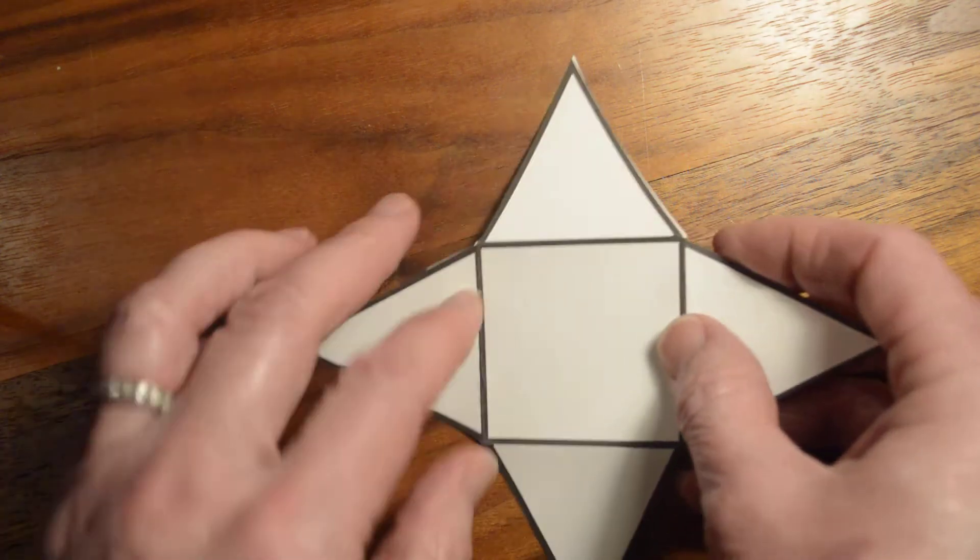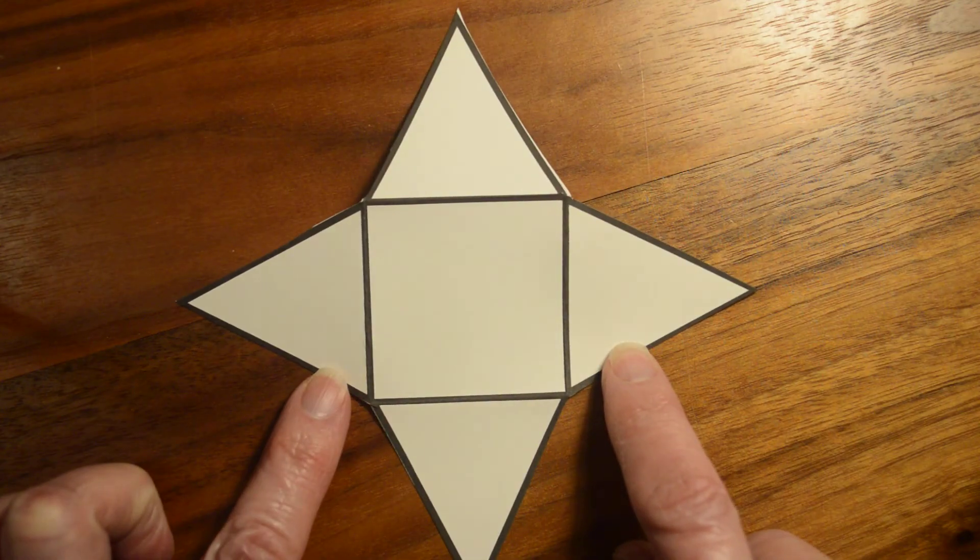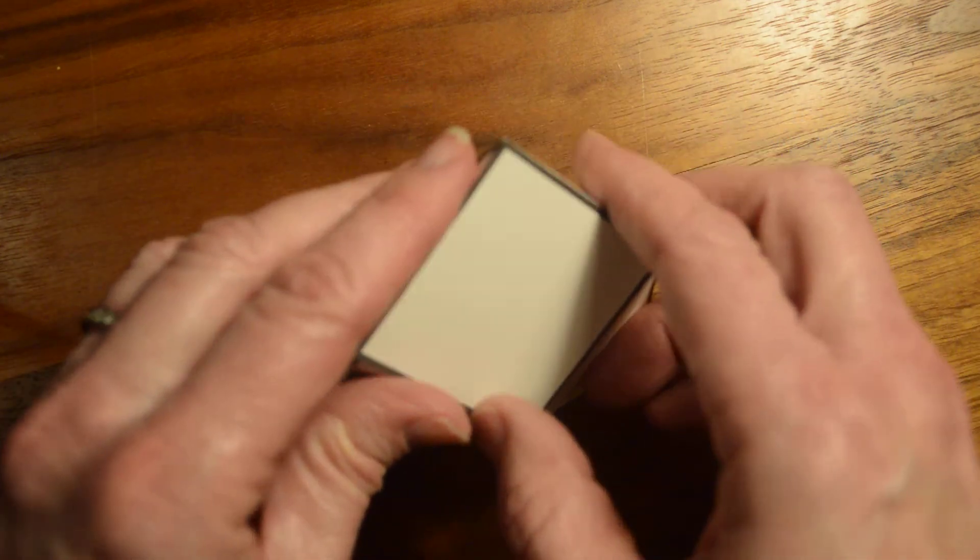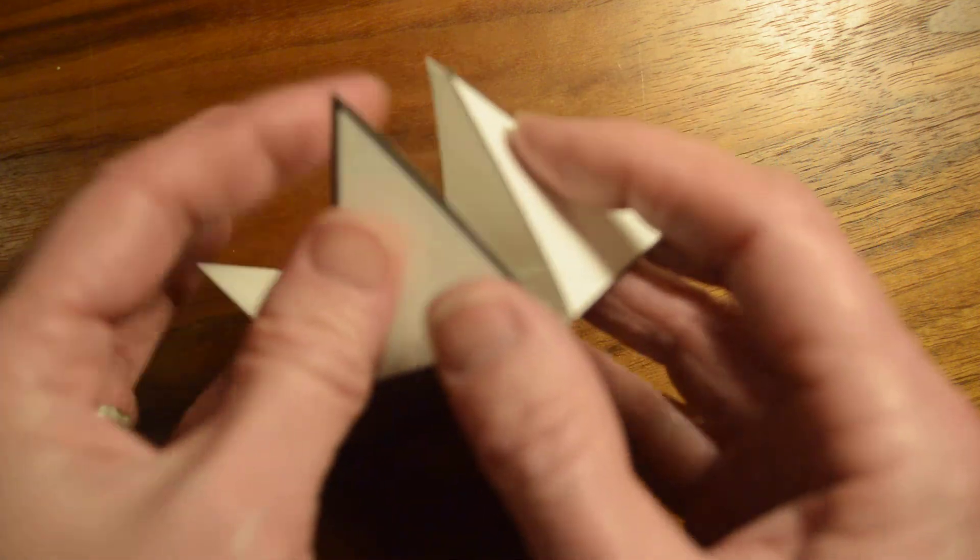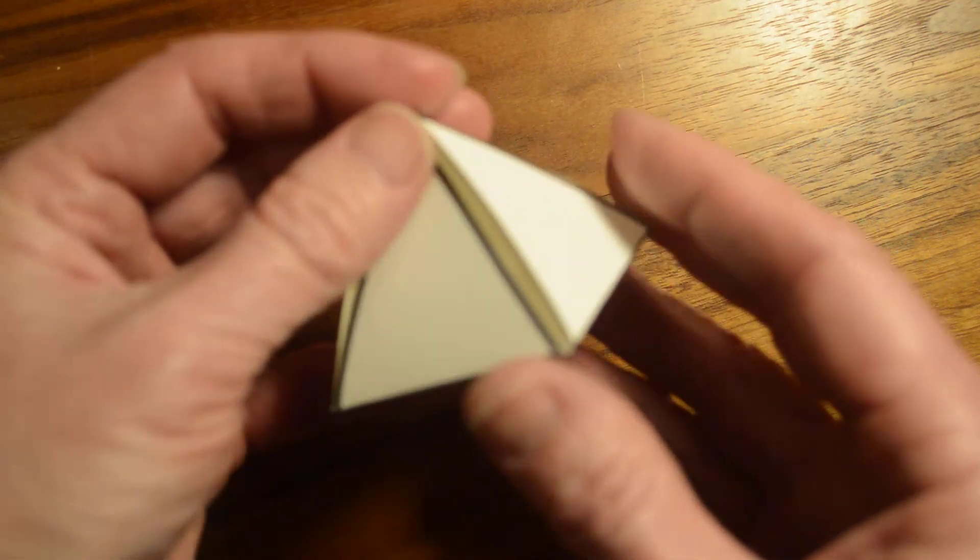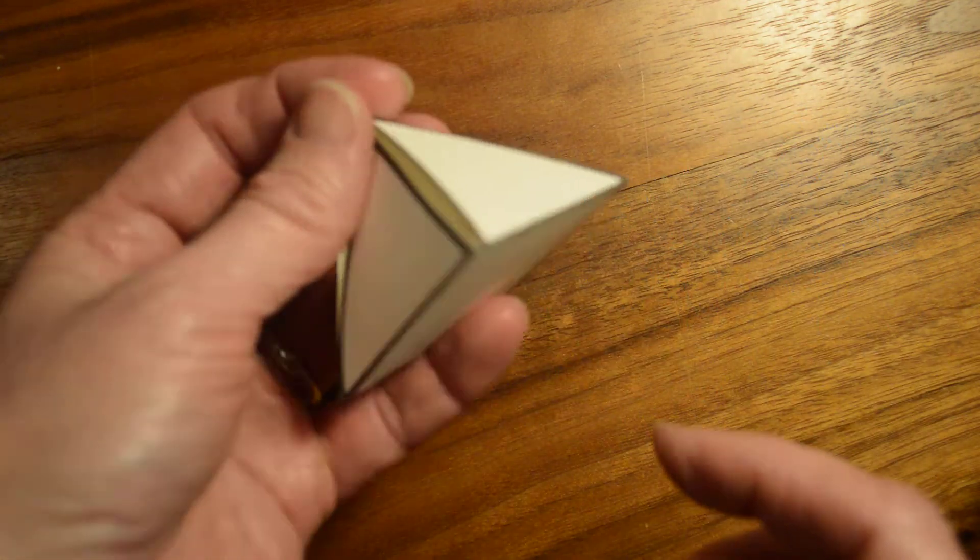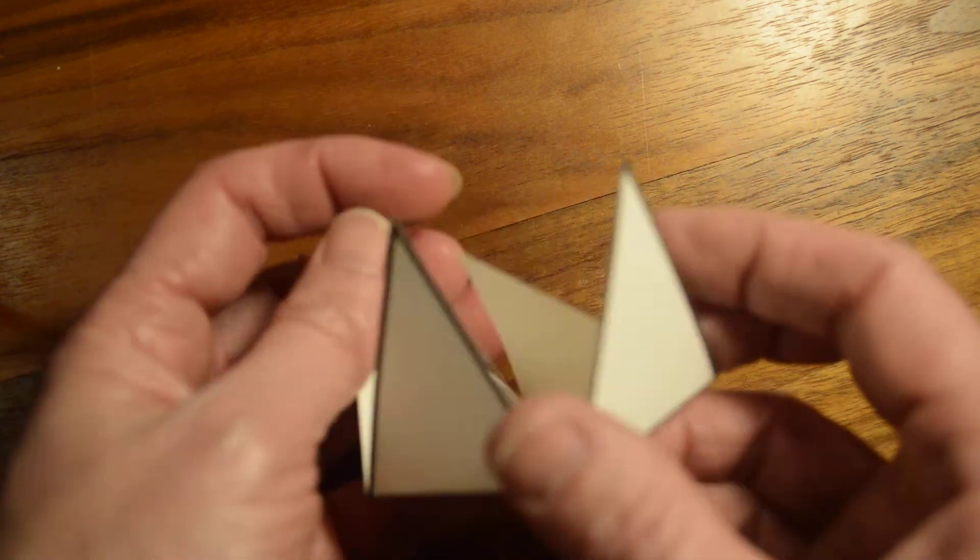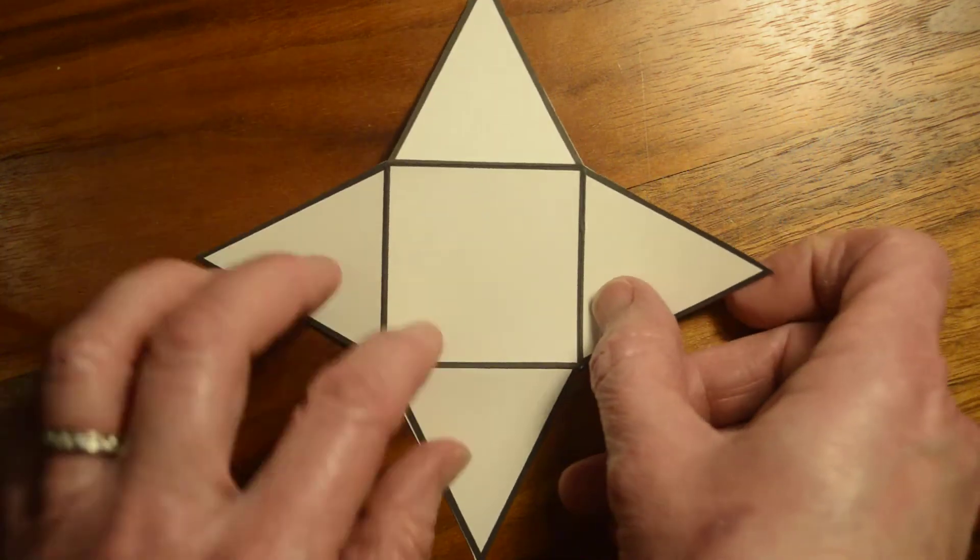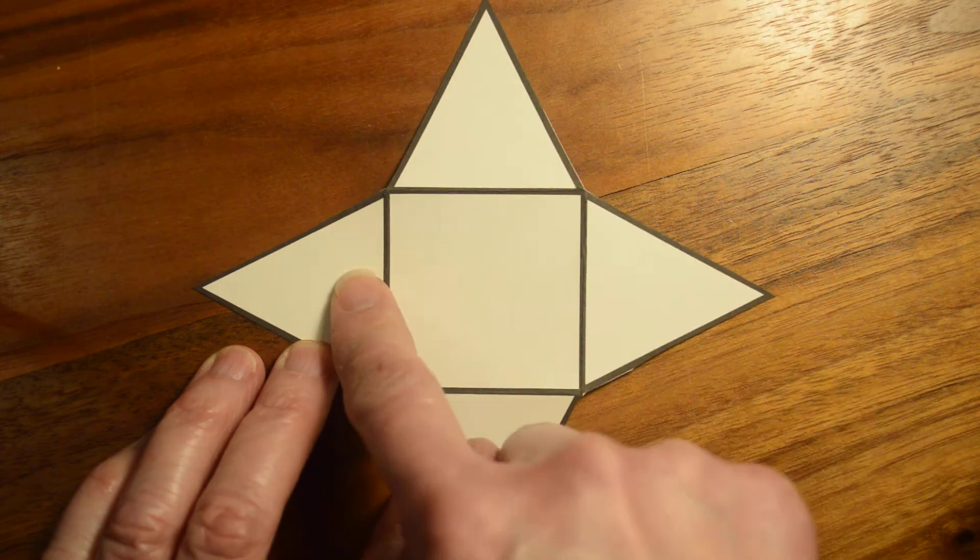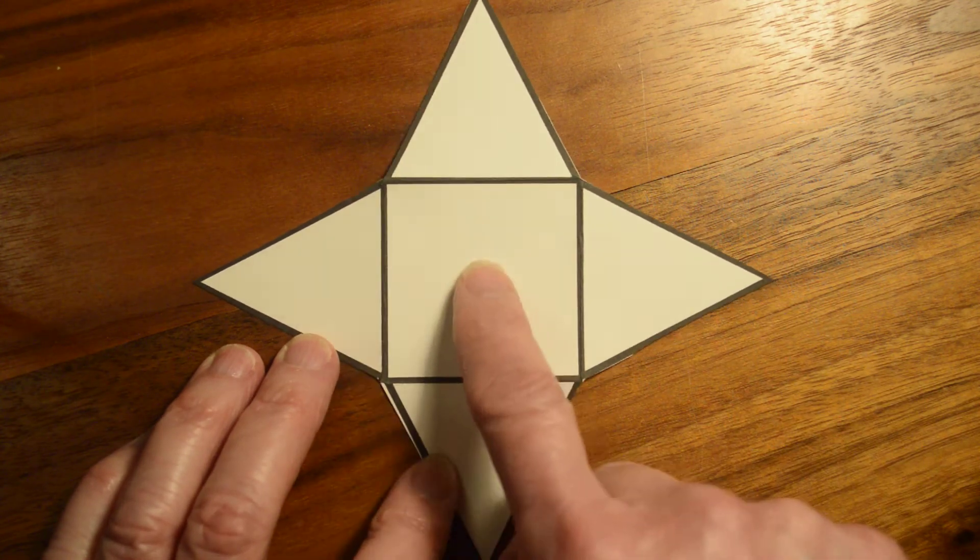Another one that we have is a pyramid that has a square base. And if we fold that up, we end up with what looks like one of the pyramids at Giza. So a square base right there. And when we would make this, when we would find the surface area, four identical triangles and then this one square.